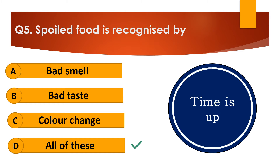Your time is up and the right answer is option D — All of these. Spoiled food is recognized by bad smell, bad taste, and color change.